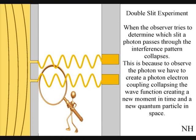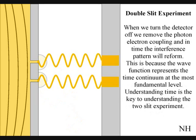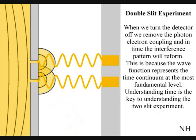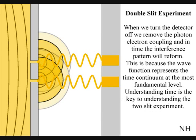Because to observe the photon, we have to physically create a photon-electron coupling, collapsing each wavefront into a new quantum particle that will have its own position in space and time that the wavefront never had before the collapse. If we turn the detector off, we remove the photon-electron coupling, and in time, the interference pattern will reform.